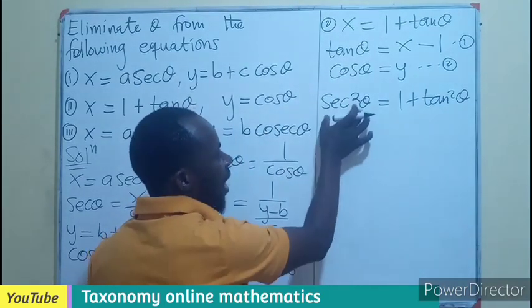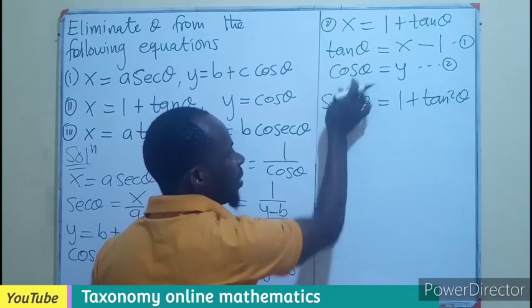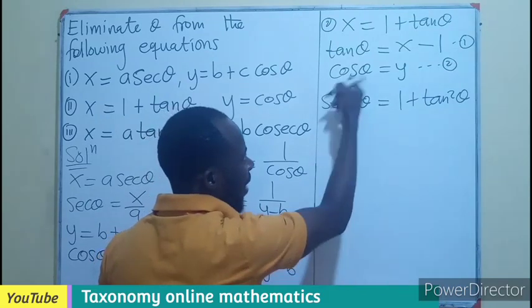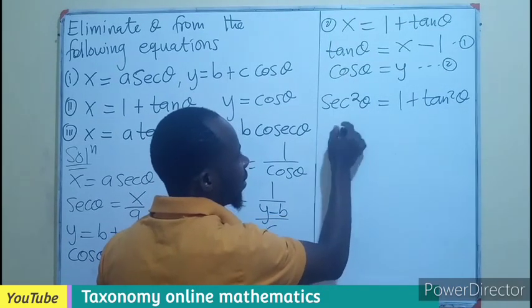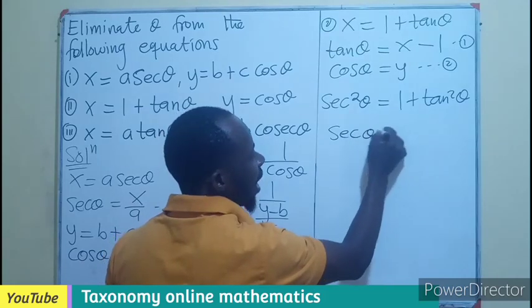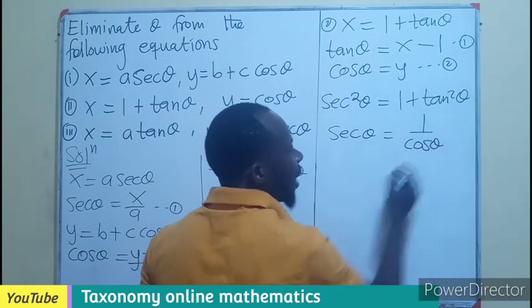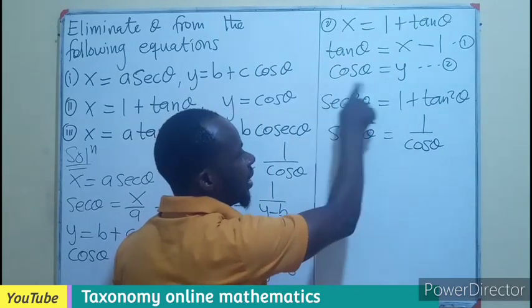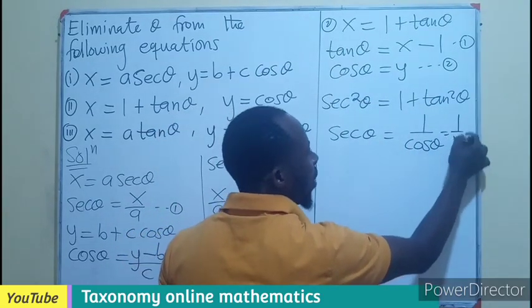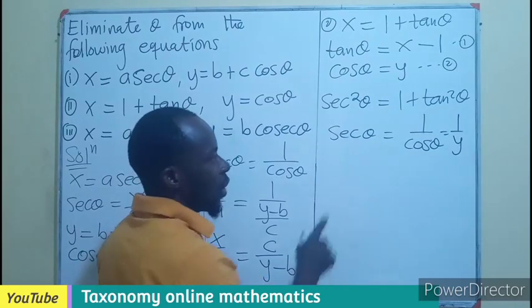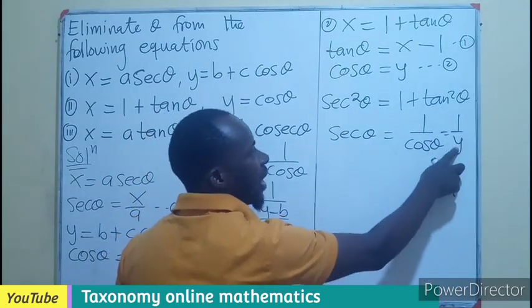So what I mean is that right here, I will be having, okay, let me write this one first. So let's say sec theta equals 1 over cos theta, but what is cos theta in this case would be 1 over Y. So now whenever I see sec, I put 1 over Y.